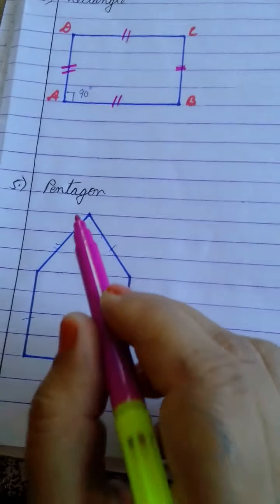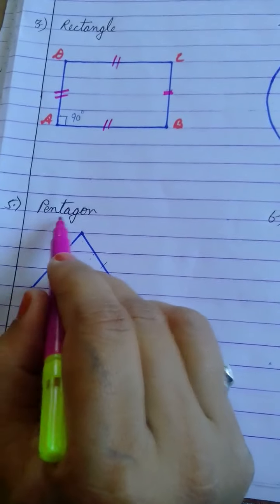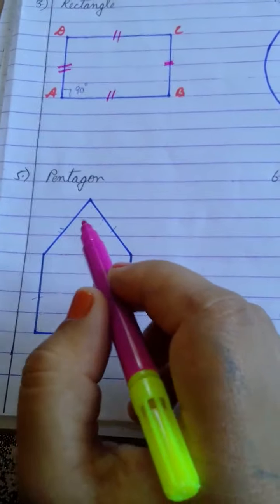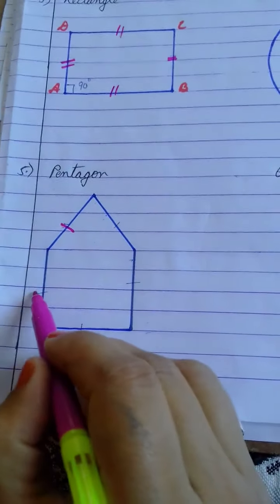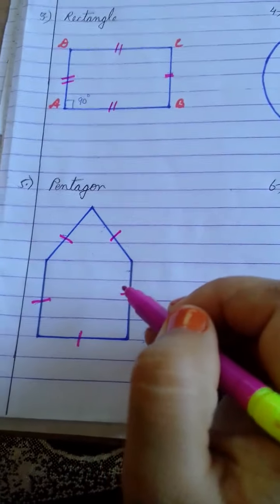Next is pentagon. As the name itself suggests, pentagon. Pent means five. That means it is a closed figure having five sides. One, two, three, four and five.